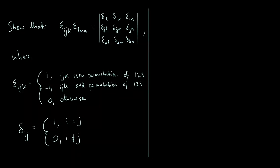Hello everyone. Today we're going to prove a very useful identity that links epsilons to deltas, where the epsilons are the Levi-Civita symbol or the alternating symbol, and the deltas are the Kronecker delta.